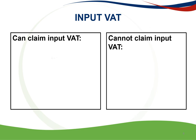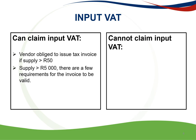A registered vendor is obliged to issue a tax invoice only if the total consideration of the supply exceeds R50. When the supply exceeds R5,000, there are additional requirements for the invoice to be valid: the words 'tax invoice', 'VAT invoice', or 'invoice' must appear; the name, address, and VAT registration number of both the supplier and the recipient must appear; an individual serialized number and the date the tax invoice was issued; a full and proper description of the goods or services supplied; the quantity or volume of the goods or services supplied; and either the value of the supply, the amount of VAT charged, and the consideration for the supply — or where VAT is calculated by applying the tax fraction to the consideration, the consideration and either the VAT charged or a statement that it includes a charge for VAT and the rate at which VAT was charged.